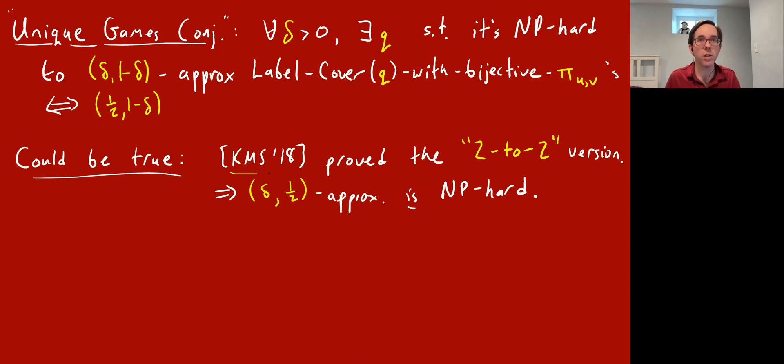Here's some evidence that it could be true. I mentioned this before, just two years ago, Khot, Minzer, and Safra proved a variation of the unique games conjecture called the 2-to-2 version, where instead of bijections π, you allow 2-to-2 maps, which makes the CSP more complicated and therefore harder to potentially solve. They showed that you do have basically δ versus 1-δ approximation hardness for this. And as a consequence, you get δ versus 1/2 approximation hardness for UGC. So unique games conjecture is equivalent to saying that if I give you a 99% satisfiable instance, it's NP-hard to get half. They showed that if I give you a half satisfiable instance, it's hard to get 1%.